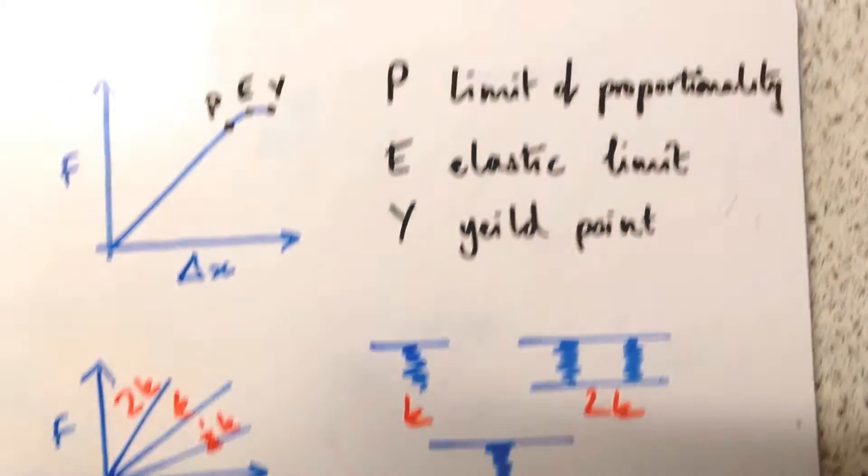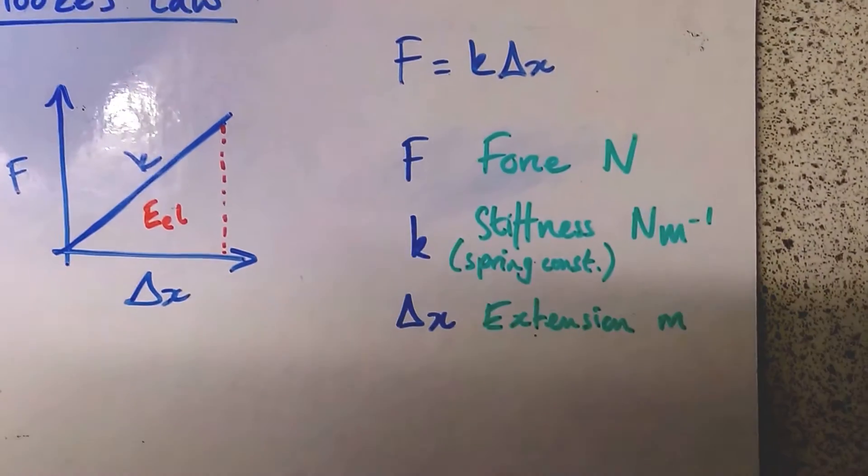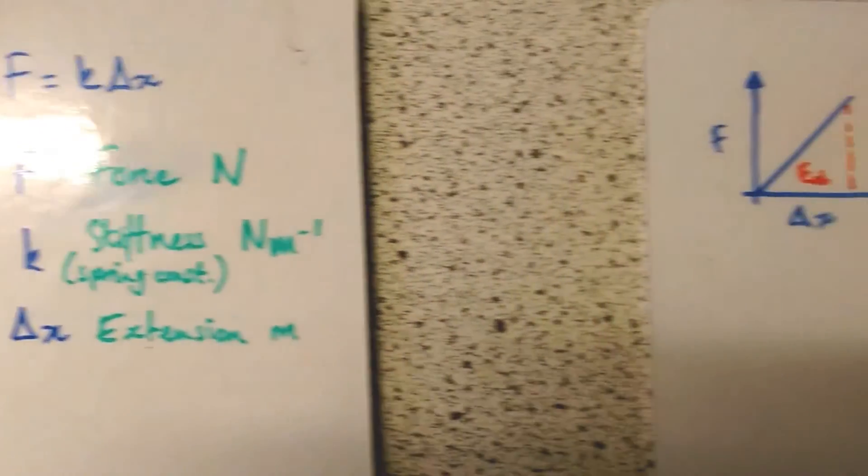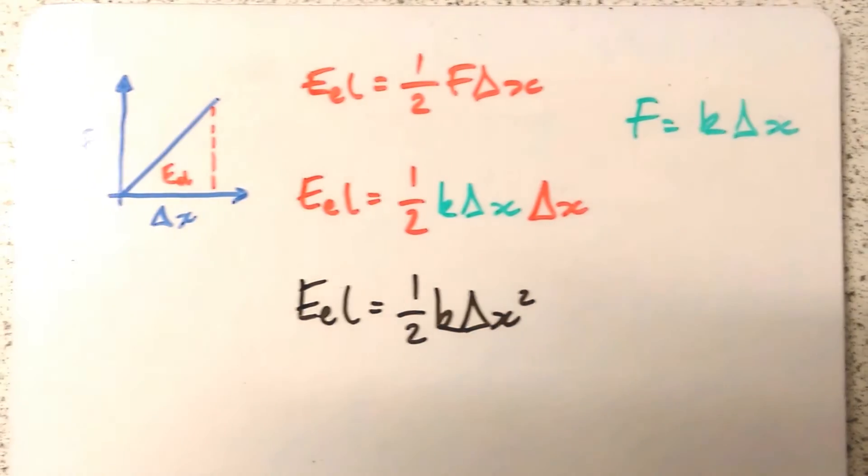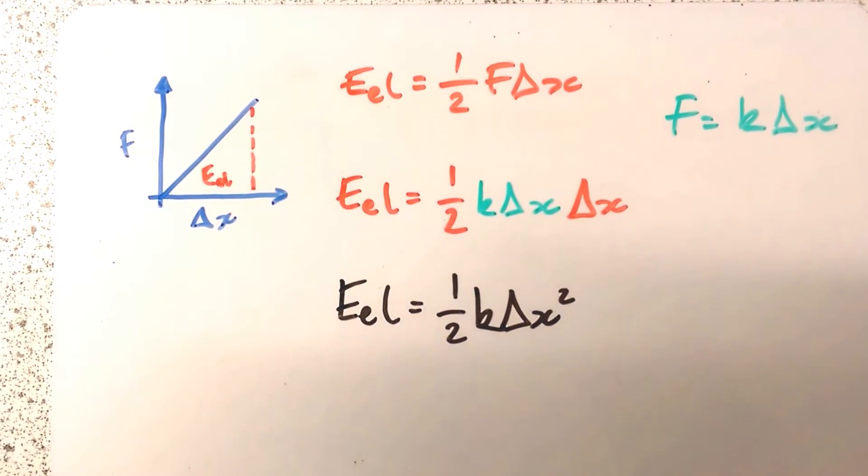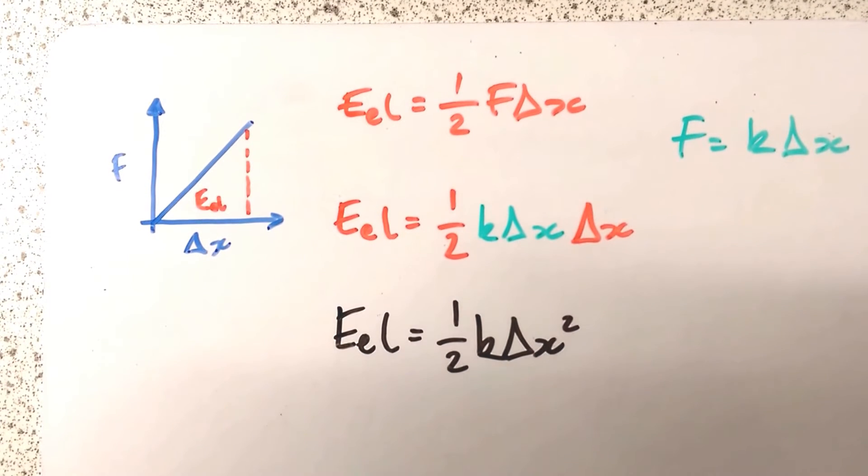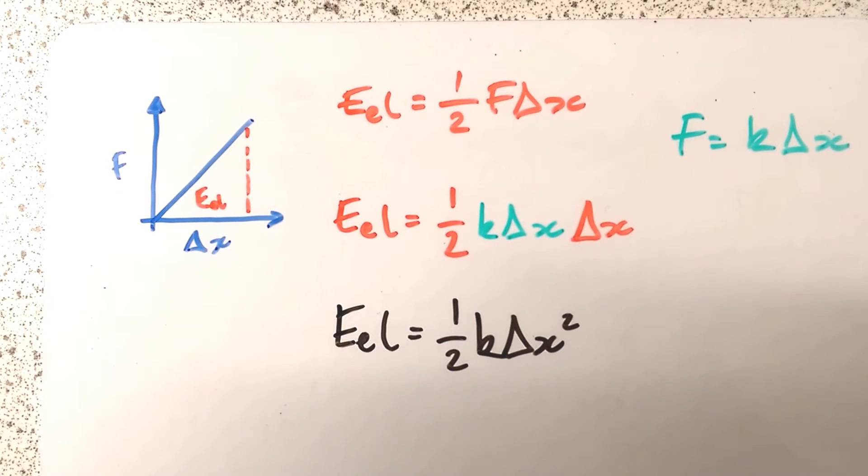You remember me saying that the elastic strain energy was the area underneath the graph. We can actually use that to derive a new formula. So bear with me. Here we go. Our elastic strain energy, E_el (E elastic), is the area underneath the force-extension graph.